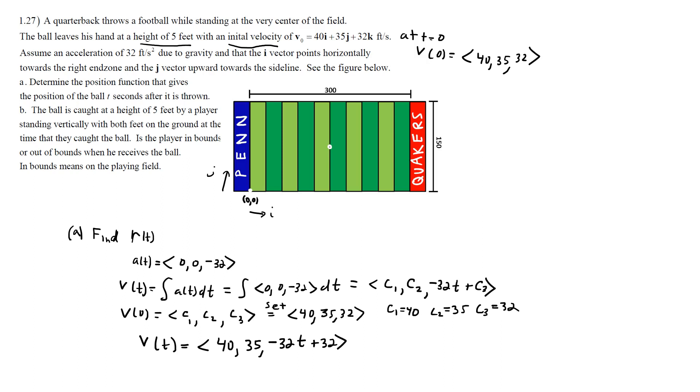We now repeat this process in order to find the position function. We integrate velocity. Let's do that over here. R of T is going to be equal to the integral of V of T. And so we'll integrate that vector. We have 40, 35, and negative 32T plus 32.